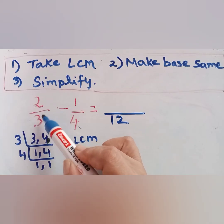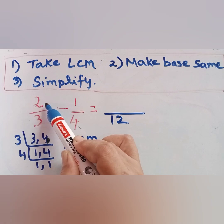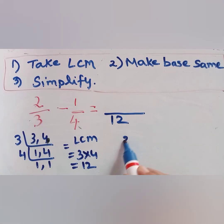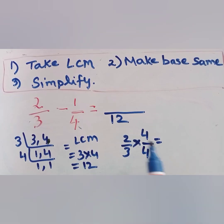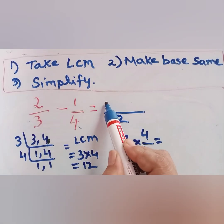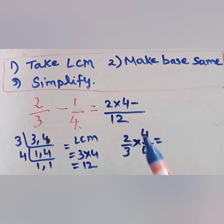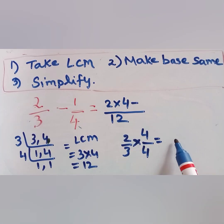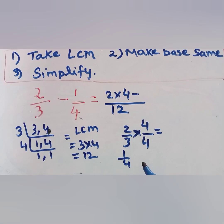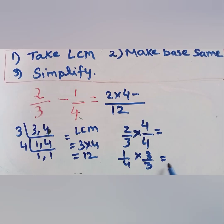Now we have to make the base same by multiplying numerator and denominator. For 2 by 3, we need to make the denominator 12, so we multiply by 4. The numerator also becomes 2 × 4 and the denominator becomes 12. For 1 by 4, we convert to base 12 by multiplying numerator and denominator by 3. The base becomes 12 and the numerator becomes 1 × 3.